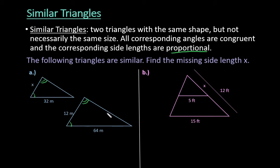So what I'm going to do is, the way that I personally like to set this up is that I figure out what side this corresponds to in the other triangle, and that's how I set up my proportions. So I say that x is to 12, because 12 is the one that it corresponds to, as 32 is to 64.